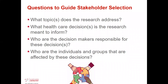When selecting stakeholders, there are some important questions to ask: what topic does the research address and what decisions is it meant to inform? Who are the decision makers responsible for those decisions, and who are the individuals and groups affected by them? You can map these questions to the 7P framework to think about where to put most of your energy. In much of my work, the end users and target audience are always key. For example, in work at community health centers, we often ask medical assistants or community health workers to deliver interventions — if they're the end users, they are incredibly important stakeholders, as are the patients who receive those interventions.